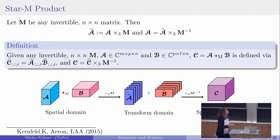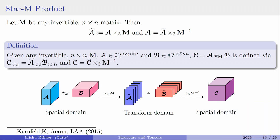Here is what we propose for multiplying two tensors together. Given any invertible N-by-N matrix M (where N is the depth dimension), I define a tensor A-hat by taking the mode-3 product with M, and I can always recover the original by multiplying by the inverse. To multiply tensors A and B, I fix M, transform each into the transform domain, perform facewise matrix-matrix products, then inverse transform to get C. In the special case where A and B are 1-by-1-by-N, this operation is commutative.